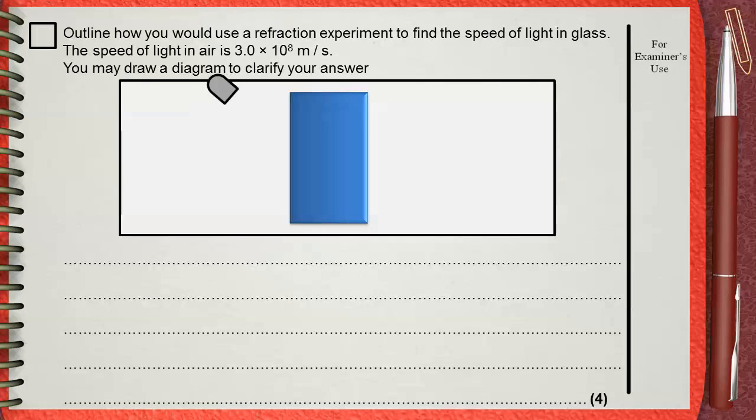This is a ray box, or any source of light that can produce a narrow thin beam of light. You can use a laser beam, you can use a torch, anything that gives you a narrow beam of light.